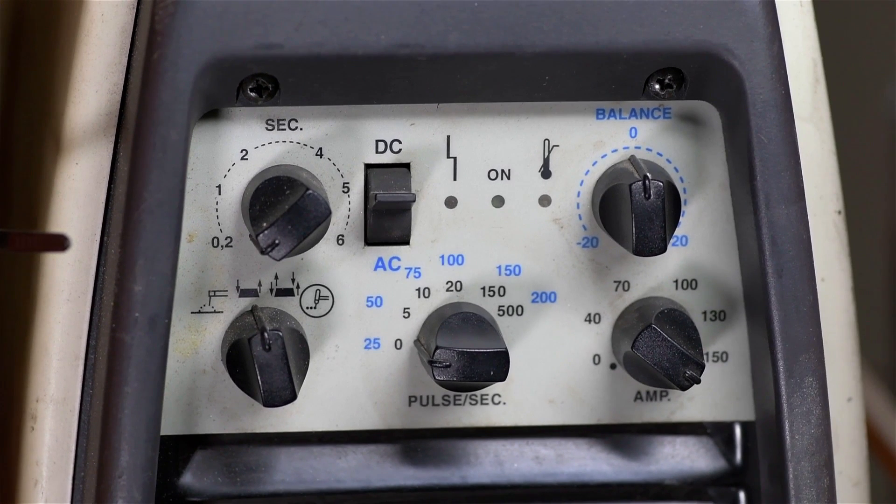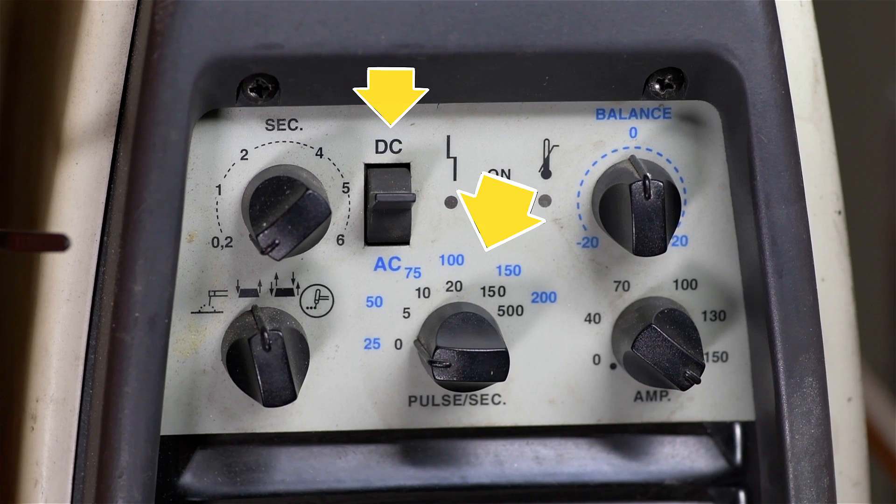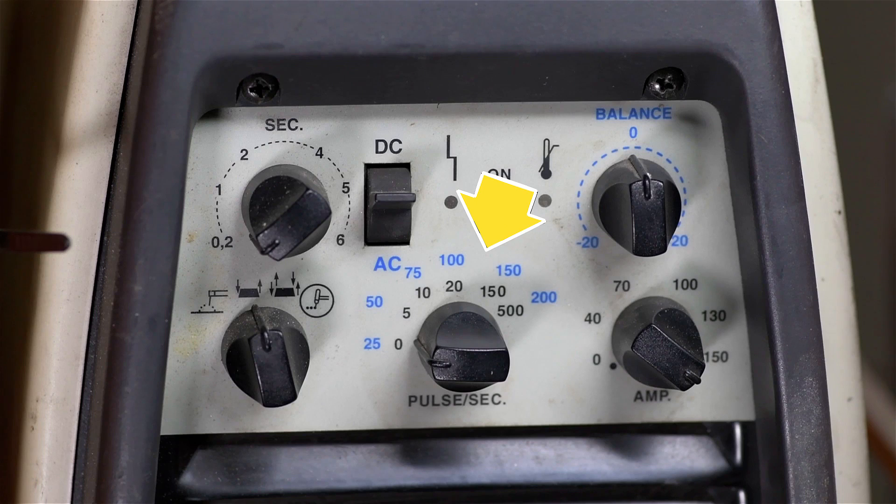I won't get into the difference between 2T and 4T, as it's not really relevant to what we're doing here. The rest of the controls are more or less what you'd expect: an AC-DC selector, a pulse or frequency selector depending on which mode you're in. This particular machine will do 5 to 500 pulses per second in DC. I really wish it would go lower, but I pulse manually if I need less.